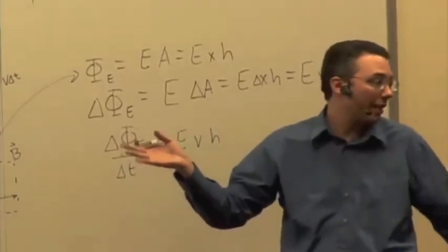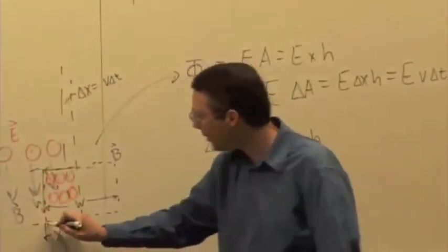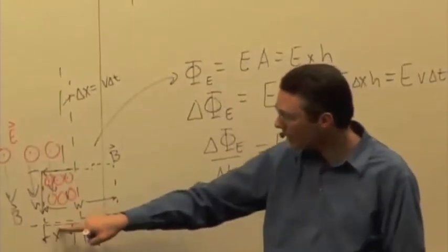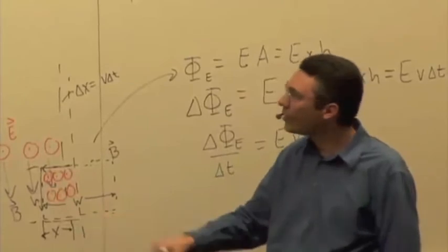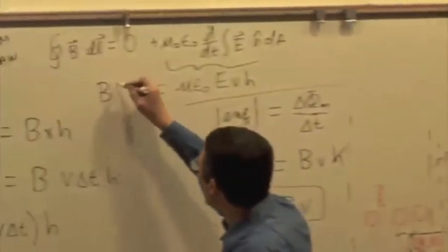B times H. So this part of the path gives me B times H, and everywhere else gives me zero. It's perpendicular here, zero out here. So I end up with B H on this side of the equation.